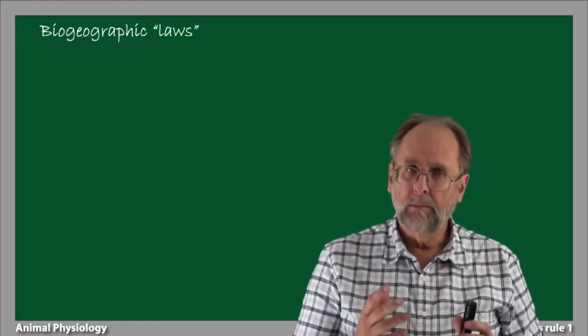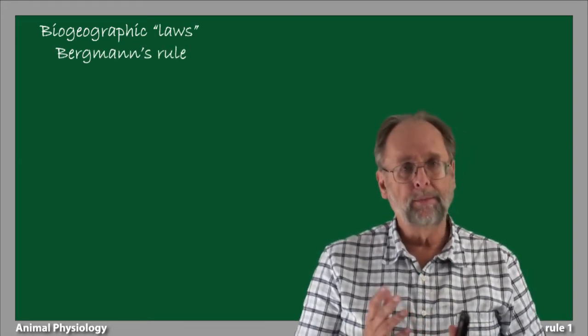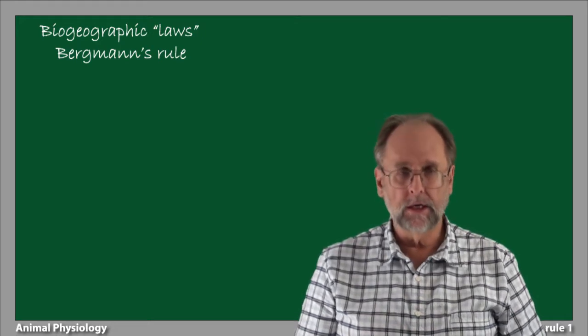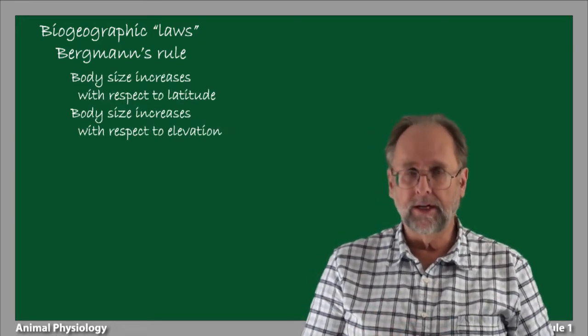We're going to look at a famous so-called biogeographic rule, Bergman's Rule, which proposes a positive correlation of body size with respect to latitude and elevation.